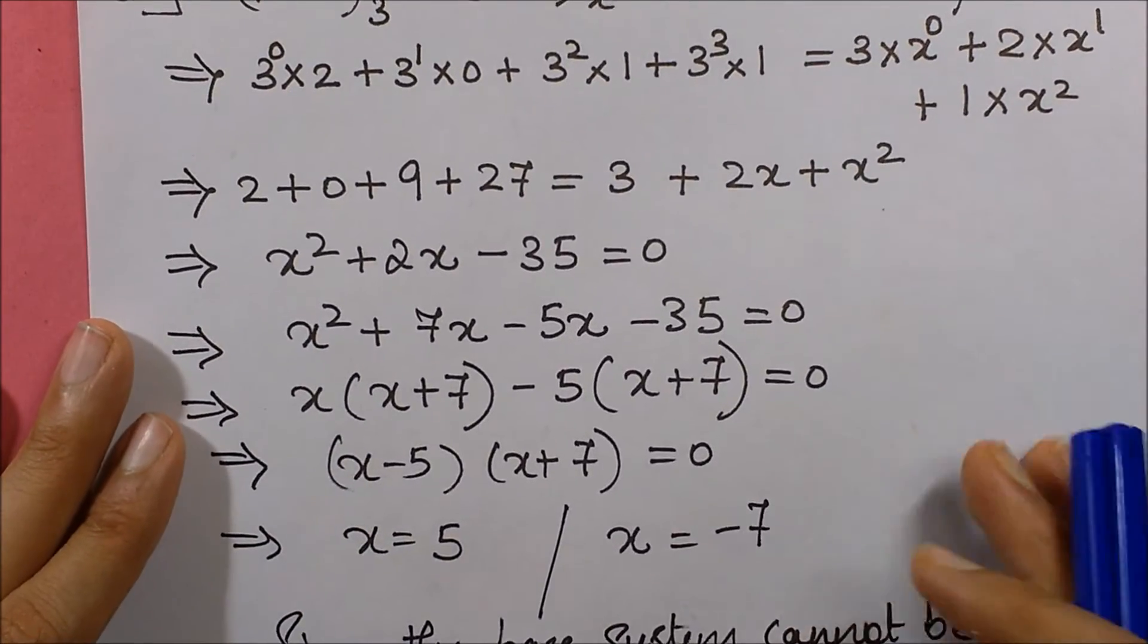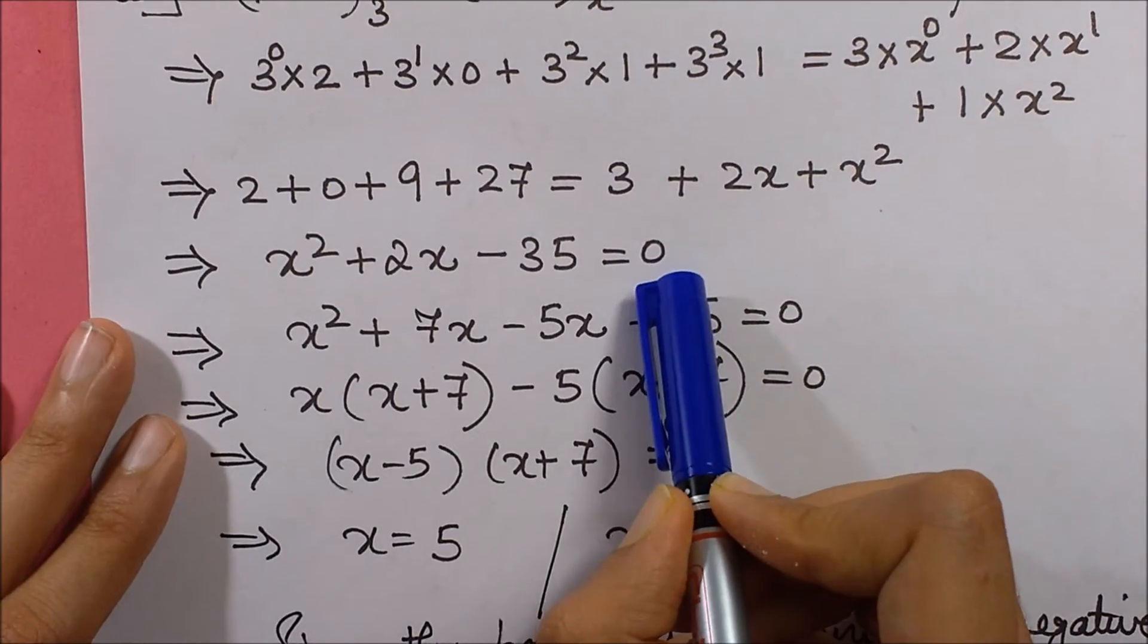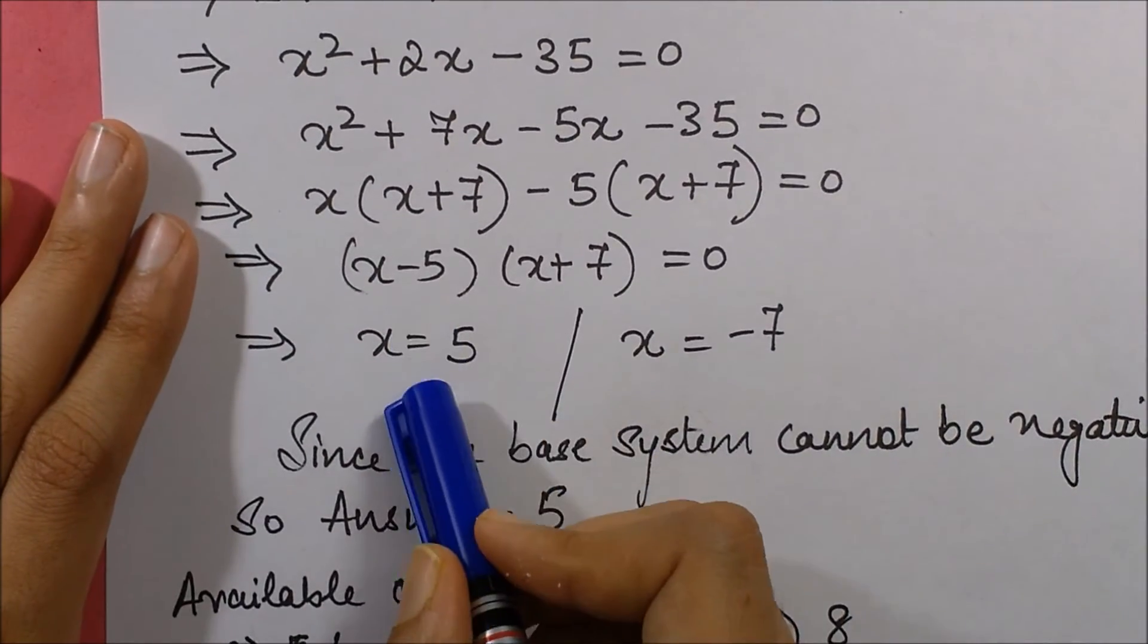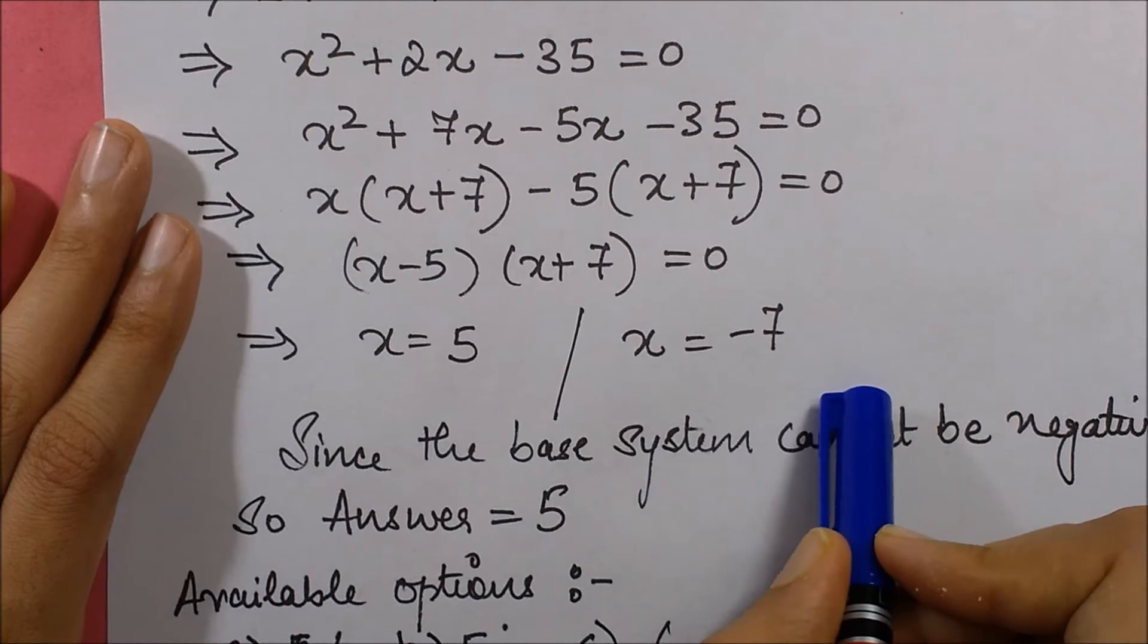Then when you simplify this, you get this equation. You solve it out by factorizing it. And finally you get the values of x as 5 and minus 7.